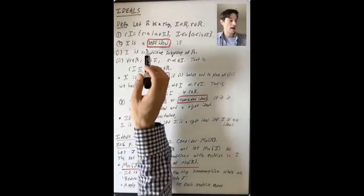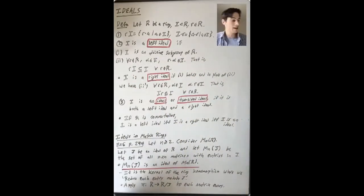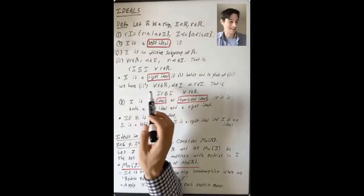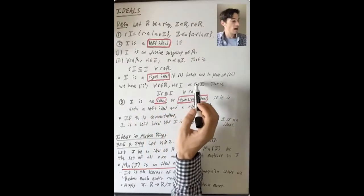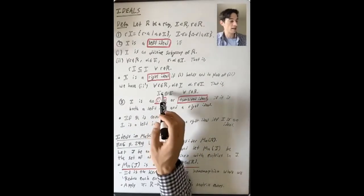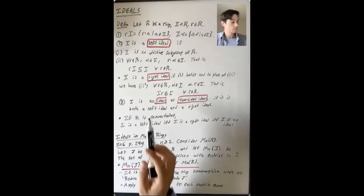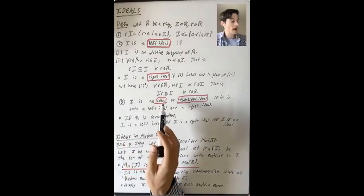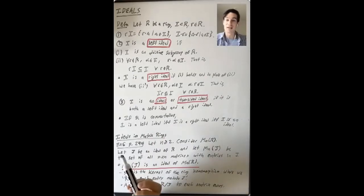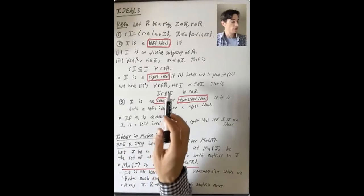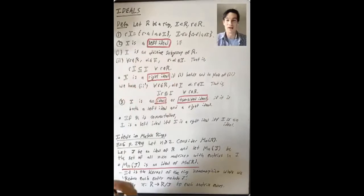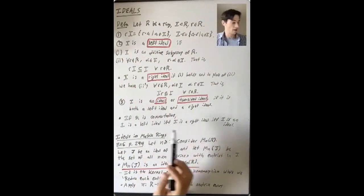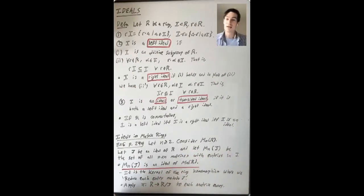A right ideal is an additive subgroup closed under right multiplication: for all r in R and alpha in I, alpha times r lands back in I, i.e., Ir is a subset of I for all elements of the ring. The cases we'll be most interested in are when I is a two-sided ideal — both a left and a right ideal. If R is commutative, rI and Ir are the same sets, so left, right, and two-sided ideal are equivalent. In a non-commutative ring, you really have to check left and right ideals separately.